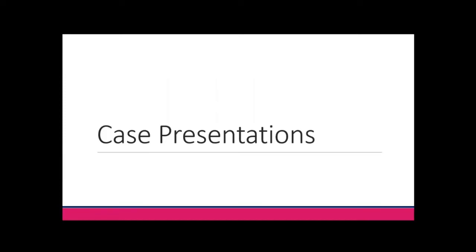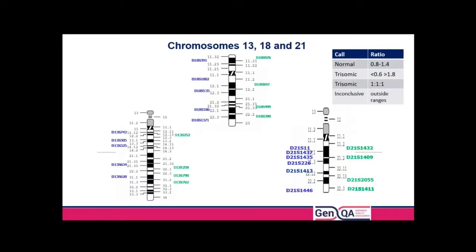Thank you Sue. I'm now going to take you through a few case presentations to illustrate what Sue has just talked about. These are cases that were run in our lab, using our markers — your markers may differ. We have one PCR multiplex kit which has all the blue markers in it: a range of markers on each of chromosomes 13, 18, and 21. We also have backup kits for each of the chromosomes — the green markers — if we need to run more markers to investigate unusual findings.